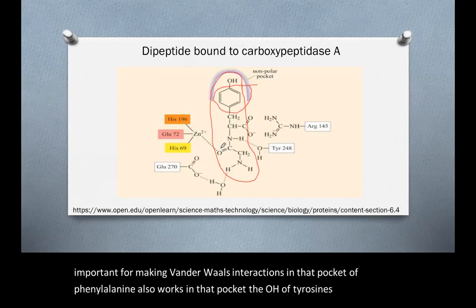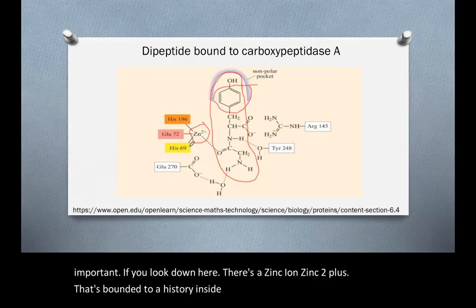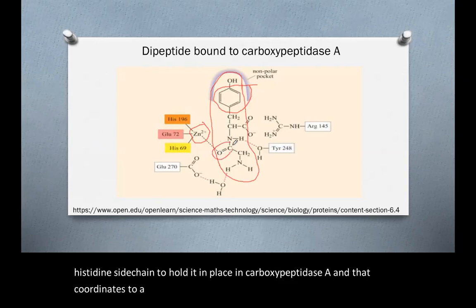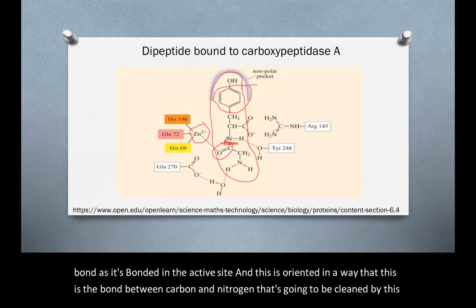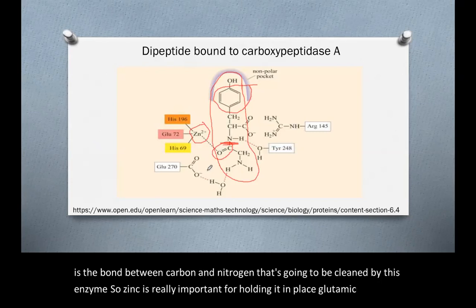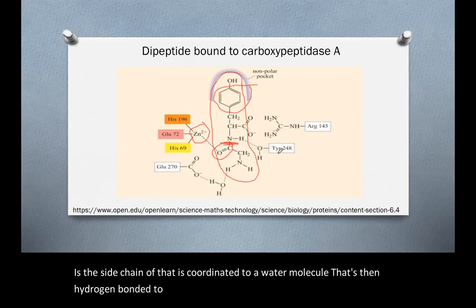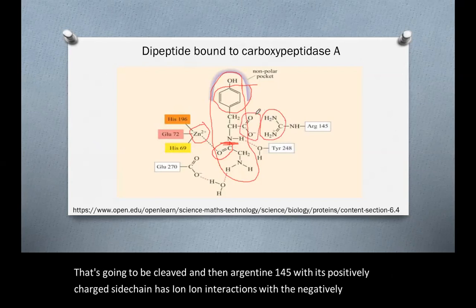The OH of tyrosine is not important in that pocket. There's also a zinc 2+ ion bounded to a histidine side chain, a glutamic acid side chain, and another histidine side chain to hold it in place in carboxypeptidase A. This zinc coordinates to a carbonyl oxygen of the dipeptide backbone in the active site, oriented so that the carbon-nitrogen bond is positioned to be cleaved by the enzyme. Glutamic acid-270 coordinates to a water molecule hydrogen bonded to the dipeptide, tyrosine-248 is directly hydrogen bonded to the peptide backbone, and arginine-145's positively charged side chain has ion-ion interactions with a negatively charged portion of the dipeptide.